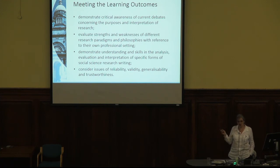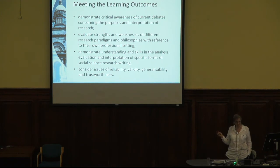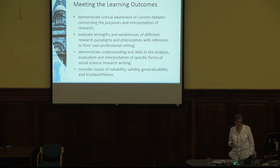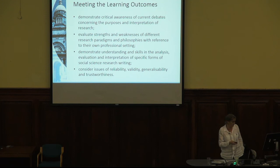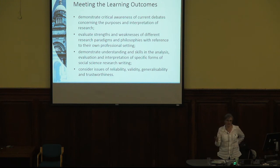These are the learning outcomes — they're in the course handbook. Hopefully now you can see where we've been going with the workshop activities: current debates about social science research, strengths and weaknesses of different paradigms, skills in the analysis and evaluation of specific forms of social science research writing — that's what you were doing in weeks three and four — and considering issues of reliability, validity, generalizability, and trustworthiness. Trustworthiness there is used as a catch-all for authenticity, credibility, dependability, and all that.